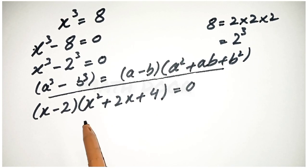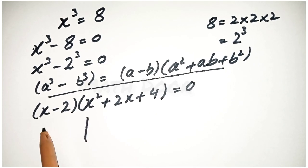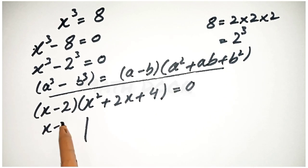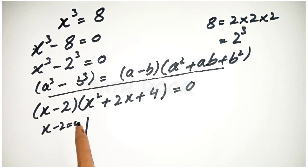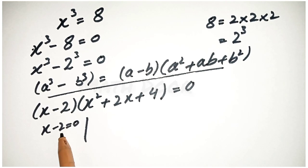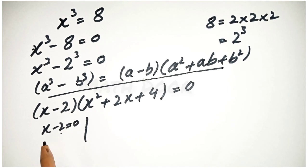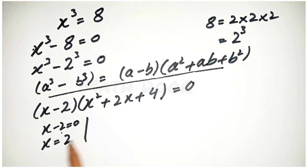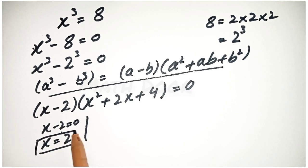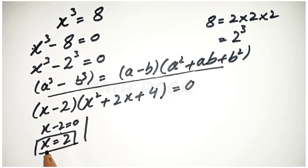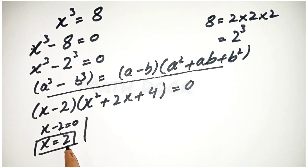So we have two factors. One is x minus 2 is equal to 0. We take this minus 2 to the right side of the equation. The equation becomes x is equal to 2. Our first answer is x is equal to 2.